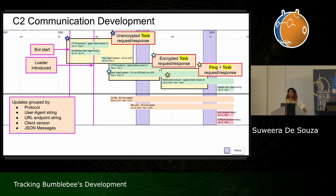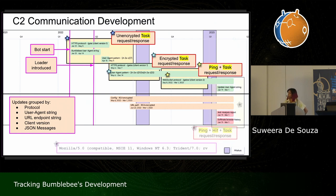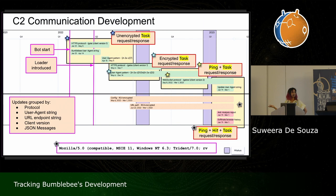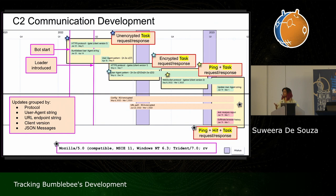Right now we are at the ping, hit, and task messages we saw earlier. At the bottom of the screen is the user agent string they're using now — it's always the same string, and I think it's just their way of trying to make traffic look a bit more legitimate.